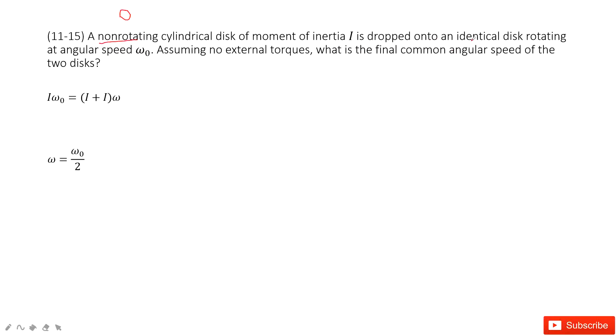And then drop it onto an identical disk. So this one tells us the moment of inertia I is given, and then for the initial disk, the angular speed omega naught is given.